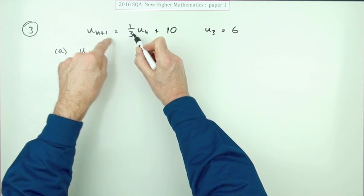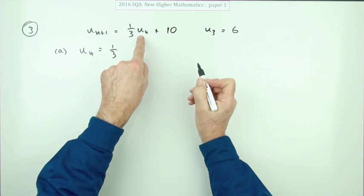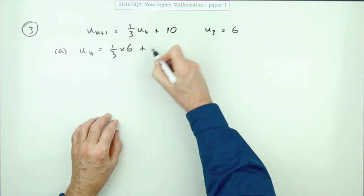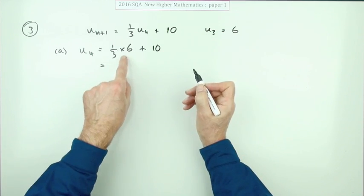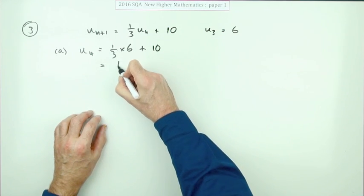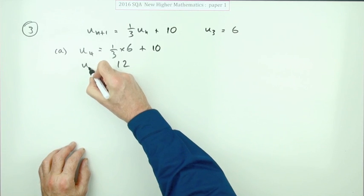This says the following term will be one third of the preceding term, which was six, and then add ten. So that means you've got a third of six, which is two, and two plus ten is twelve. And that's your mark.